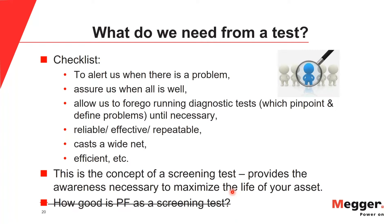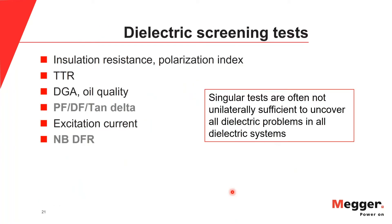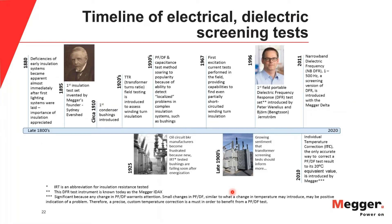It would be tempting to ask how good power factor is as a screening test, but we haven't properly introduced it yet. How many screening tests exist to test insulation in a transformer? Here is the list given in order of when each test was introduced for use on transformers. A single test is really not sufficient to screen for all dielectric problems in a transformer. On this timeline of electrical screening tests, insulation resistance and polarization index testing came first, followed by TTR testing in the 1920s. DGA and oil quality tests are included as well.